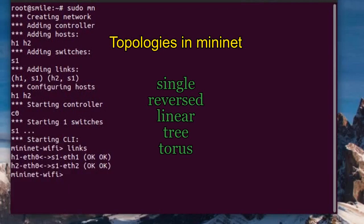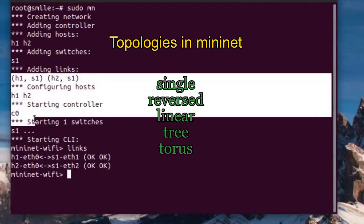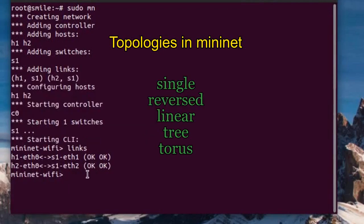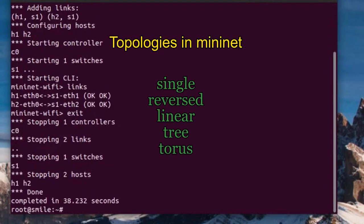The default topology in Mininet consists of two hosts and two switches. There are many other topologies available in Mininet which can be accessed using the topo keyword, such as single, reversed, linear, tree, and torus.